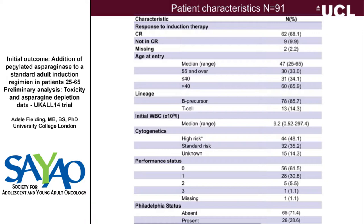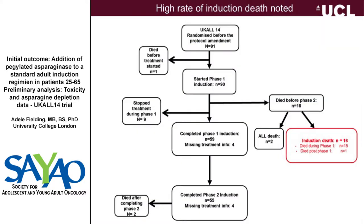There were quite a few patients over the age of 55, and quite a lot of those patients had high-risk cytogenetics. Because of the older population, quite a lot of patients had Philadelphia-positive ALL. Of 90 patients who started phase one of induction, unfortunately 18 had died before they were able to complete the second phase of treatment. Two of those patients died due to refractory or progressive ALL, but 16 died of treatment-related toxicity.